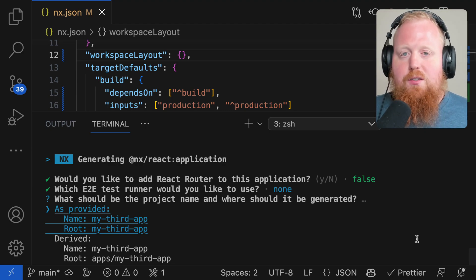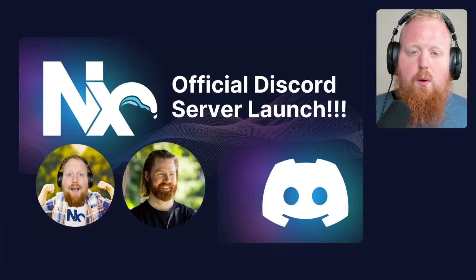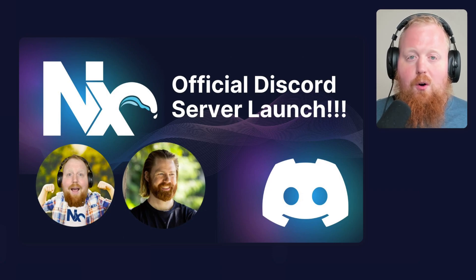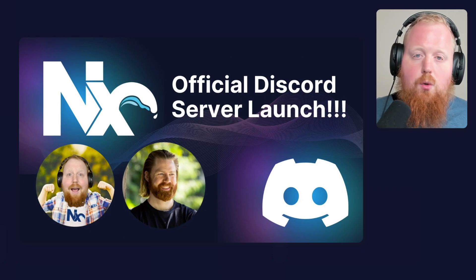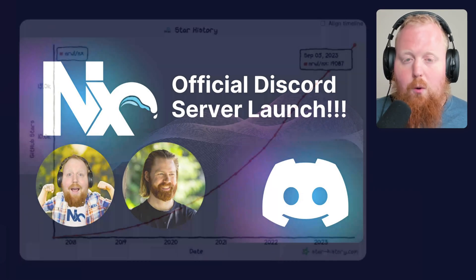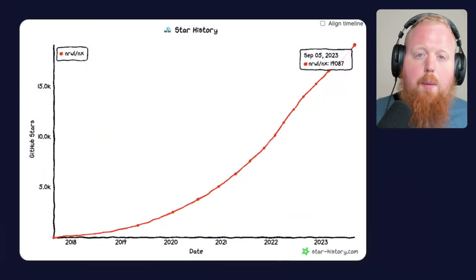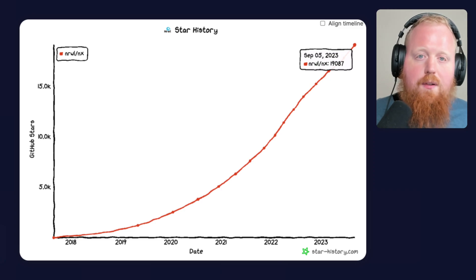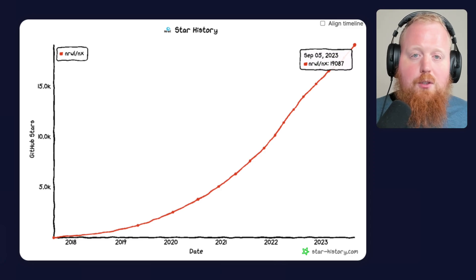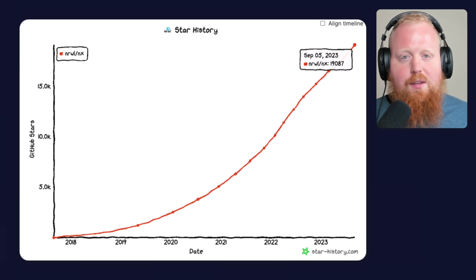As always, you can like and subscribe to this video and add comments and we'll check them out. But another great way to get plugged into the team is to join our Discord server that we just launched. It's been really cool to see how fast the Discord has been growing. On a similar note, NX is coming up on 20,000 stars on GitHub. We've had a very steady influx of GitHub stars over the years and we're closing in on that 20,000 mark. If NX has been helpful to you and you haven't starred the repo yet, please consider giving us a star to help us close in on this 20,000 goal.